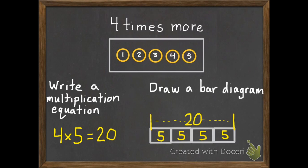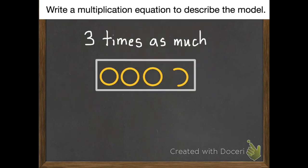So my first example, I need to write a multiplication equation to describe the model. So my model says three times as much as these four circles. So one, two, three, four.